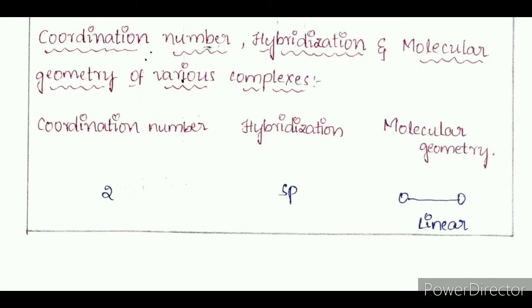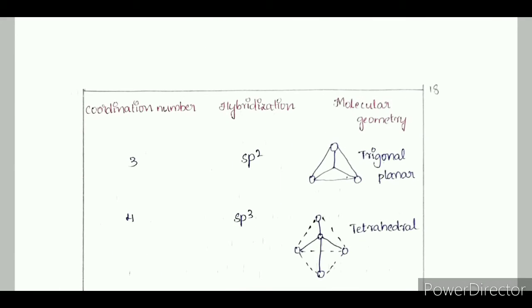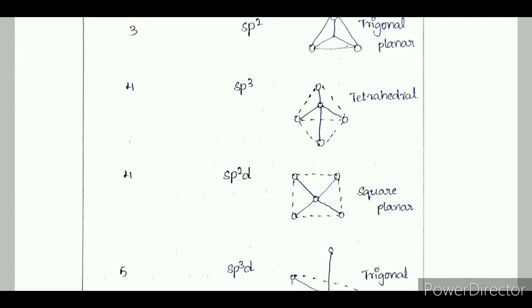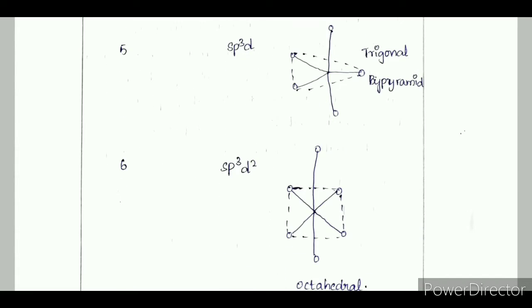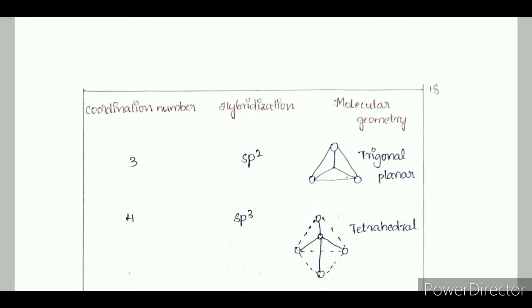Coordination number 2: hybridization SP, molecular geometry linear. Coordination number 3: hybridization SP2, molecular geometry trigonal planar. Coordination number 4: hybridization SP3 giving tetrahedral, or SP2D giving square planar. Coordination number 5: hybridization SP3D, structure trigonal bipyramidal. Coordination number 6: hybridization SP3D2, structure octahedral.